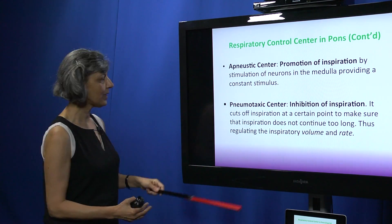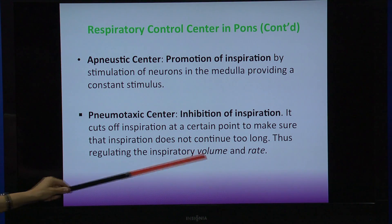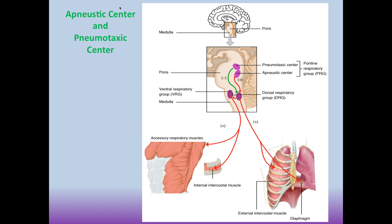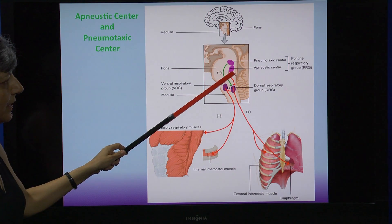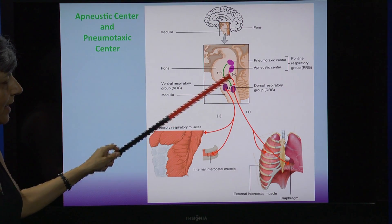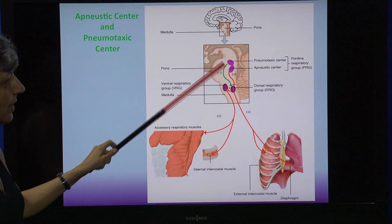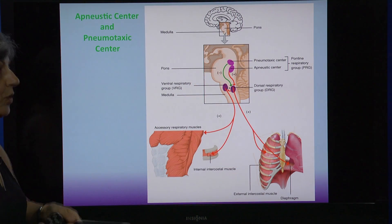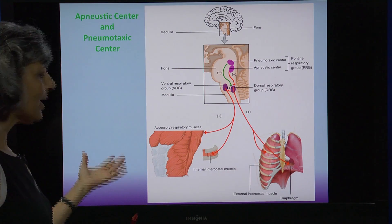The pneumotaxic center does something different — it inhibits inspiration, not shutting it off but limiting how much inspiration should go forth. Once the lung has expanded and inspiration has reached its norm, the pneumotaxic center stops the process of inspiration and allows passive expiration to occur. It limits both the inspiratory volume and the inspiratory rate.